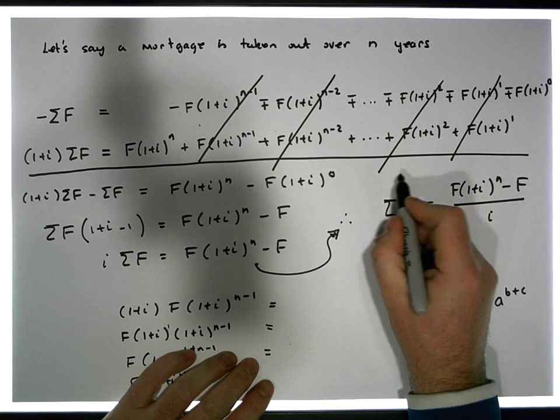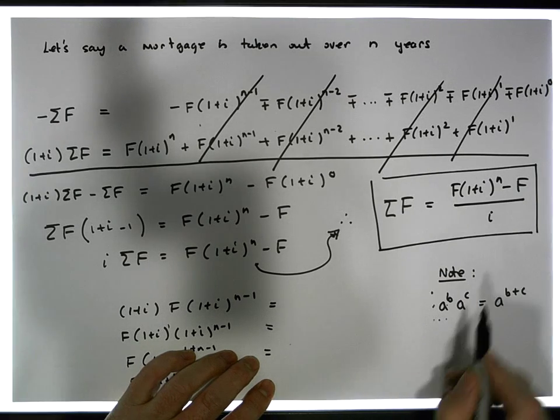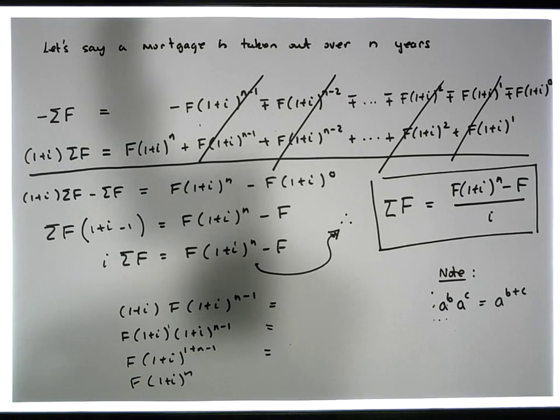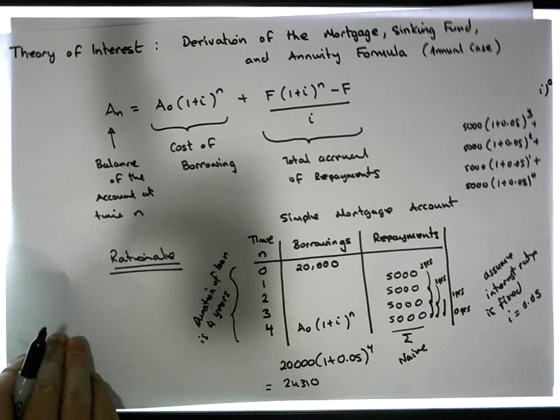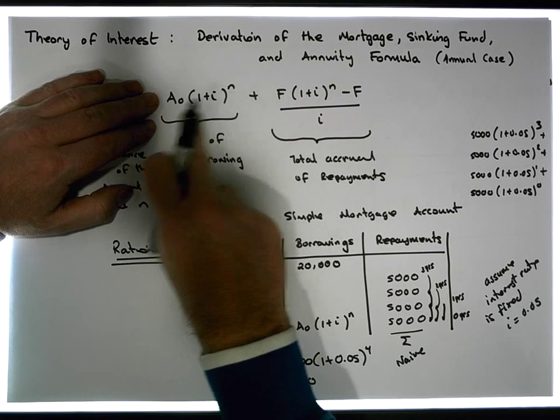what we've done here is we've actually proven this particular part of the formula here. So really, what we have now is we have both parts of the formula. We have the cost of borrowing is a simple compounding calculation.